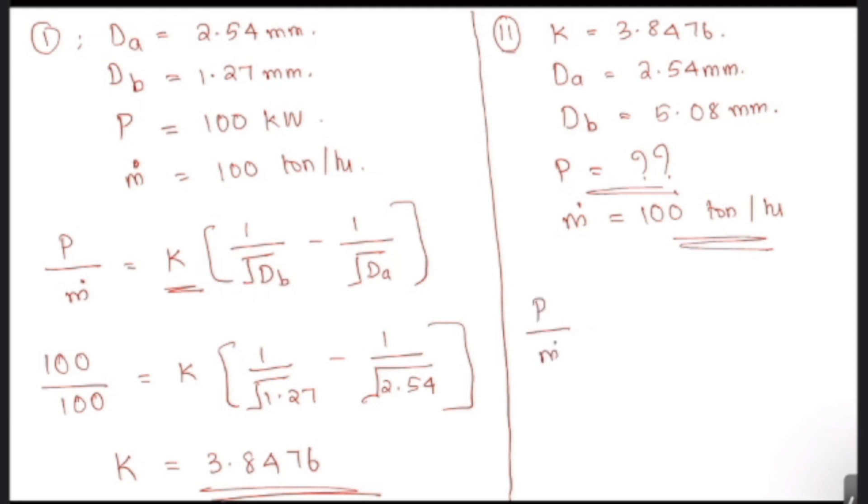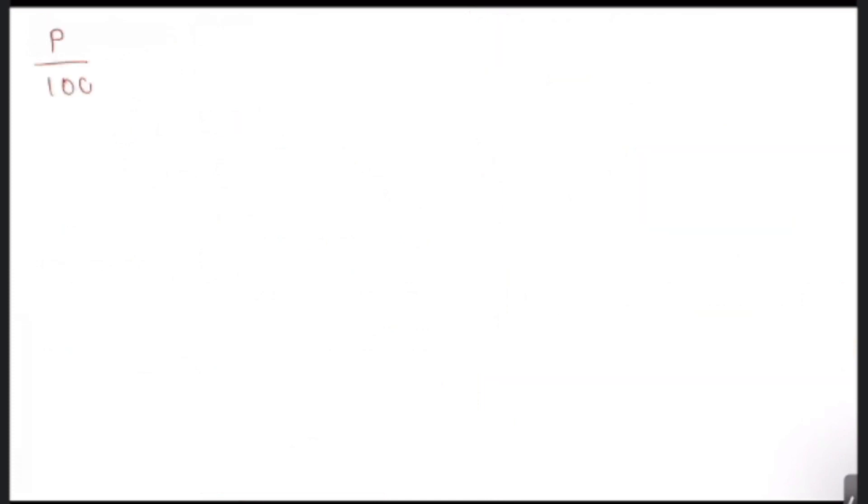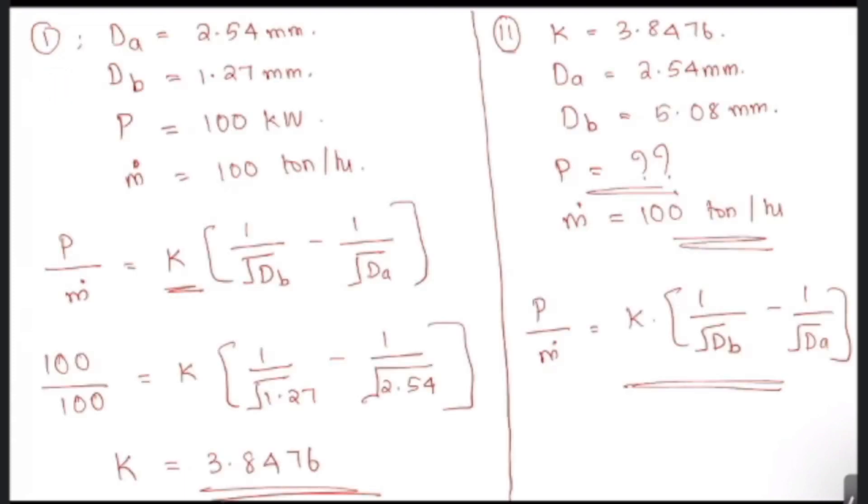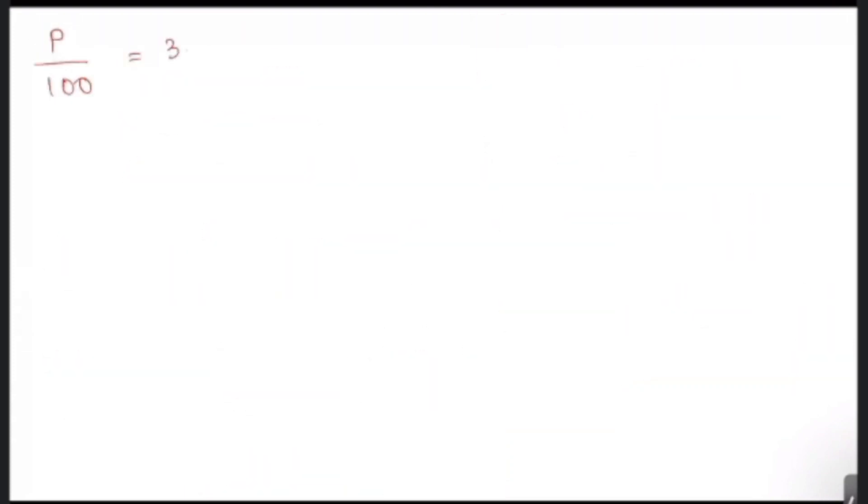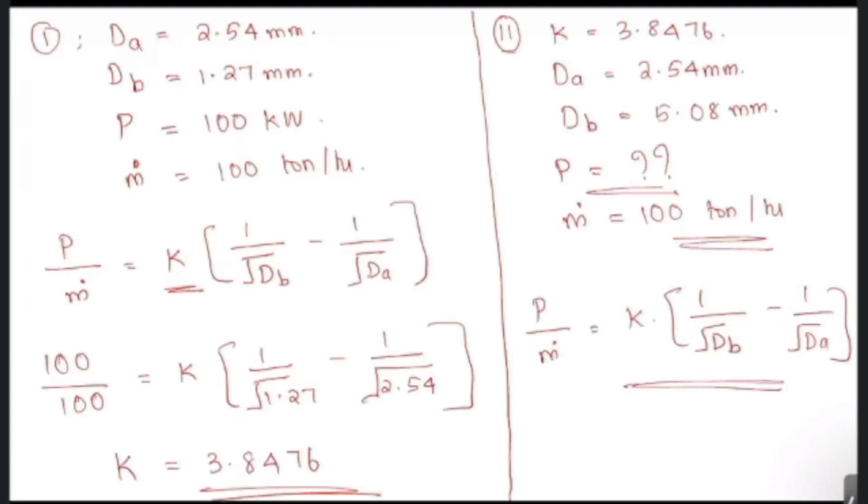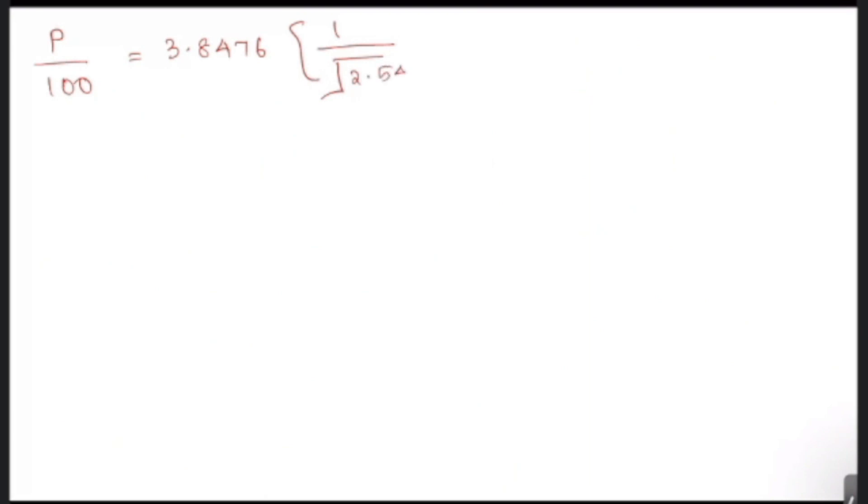So we will substitute all the values that we have. P by 100 is equal to K, which is 3.8476, into 1 by root of Db, which is given in the question, 1 by root of 5.08, minus 1 by root of 2.54.